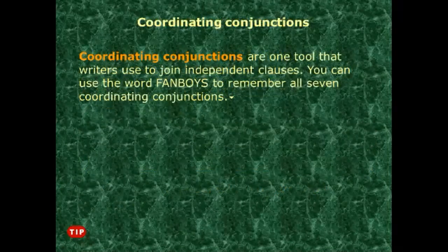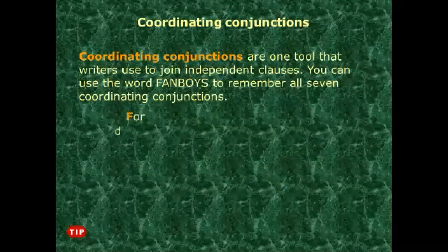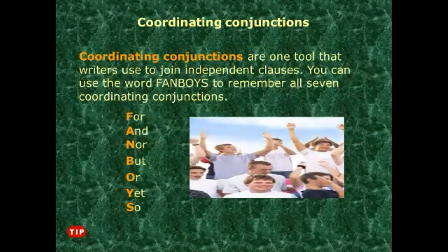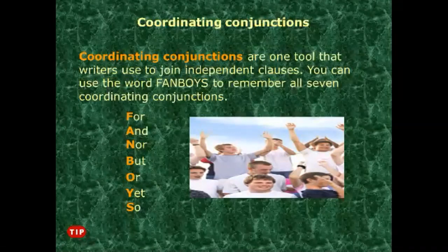Coordinating conjunctions are one tool writers use to join independent clauses. You can use the word FANBOYS to remember all seven: F for 'for,' A for 'and,' N for 'nor,' B for 'but,' O for 'or,' Y for 'yet,' S for 'so.'